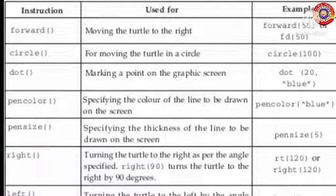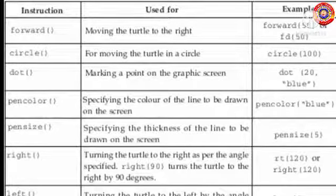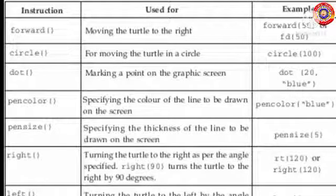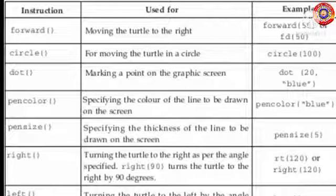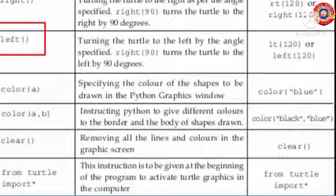The next instruction is 'right' — it is used to turn the turtle to the right by the angle specified. For example, right(90) turns the turtle to the right by 90 degrees. You can also write rt(120) or right(120) to turn the turtle to the right by 120 degrees. RT is the short form of the right instruction.